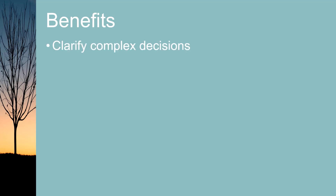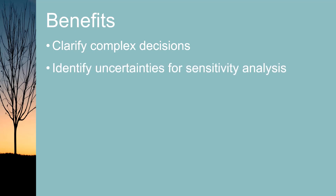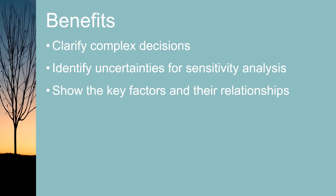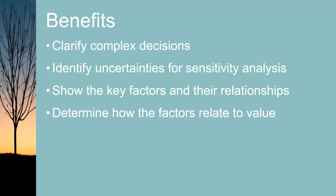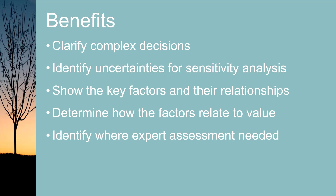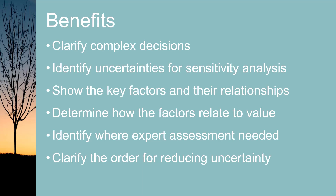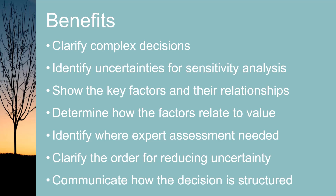An influence diagram provides many benefits to the decision-making process. The diagram provides a high-level summary of the decision, helps clarify complex decisions, identifies the uncertainties that may benefit from sensitivity analysis, shows key factors and the relationships between them, determines how factors relate to the value used as the decision criteria, identifies where expert assessment may be needed, clarifies the order in which uncertainty might best be reduced, and communicates how the decision is structured.